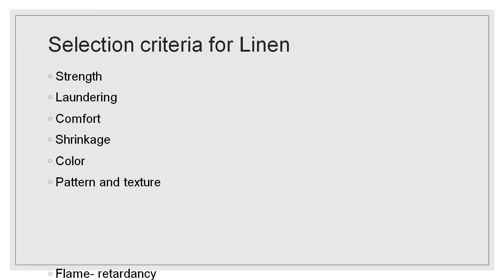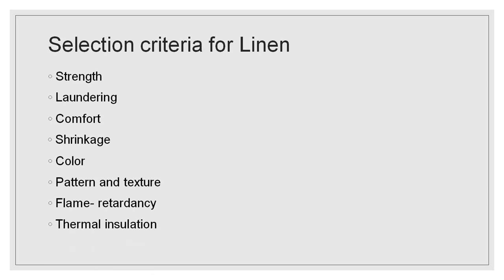The next factor is flame retardancy. Various finishes are given to fabrics, and flame retardancy is one such finish applied before using fabric for curtains, upholstery, or any other purpose. Flame retardant fabrics can be used for drapery, upholstery, and carpets. The last factor is thermal insulation. The warmth of the fabric is determined by its thermal insulation properties, measured in units called togs. This must be checked for blankets. Drapery should also help maintain the temperature of a room to some extent.